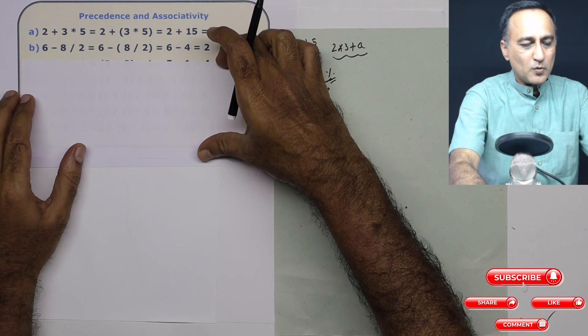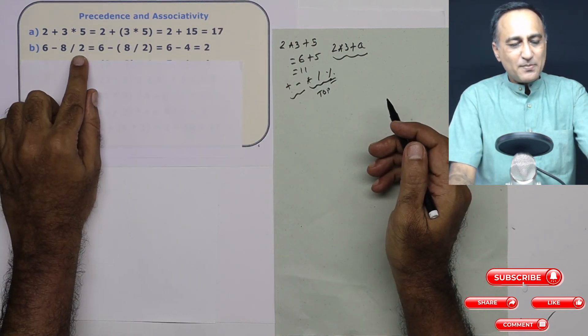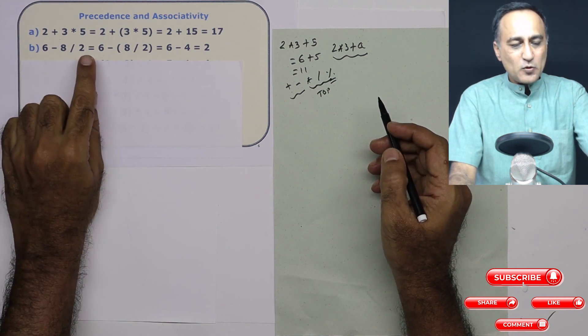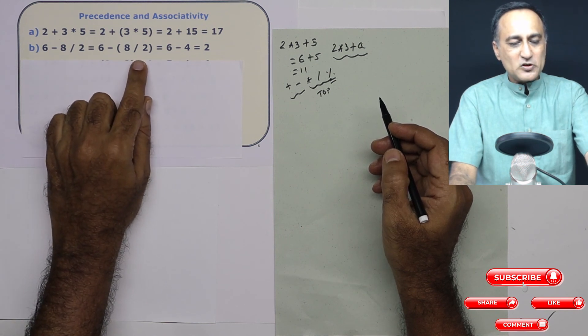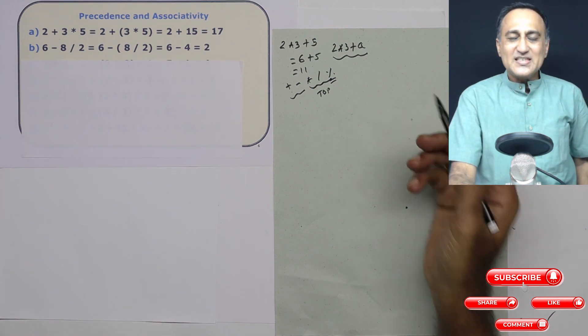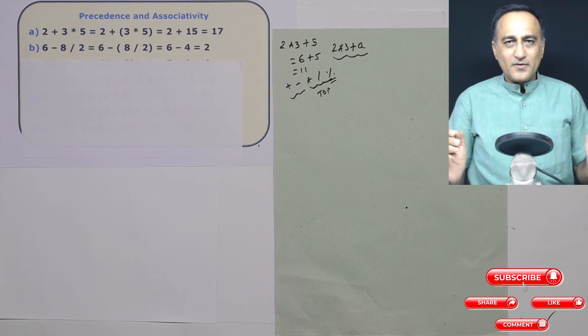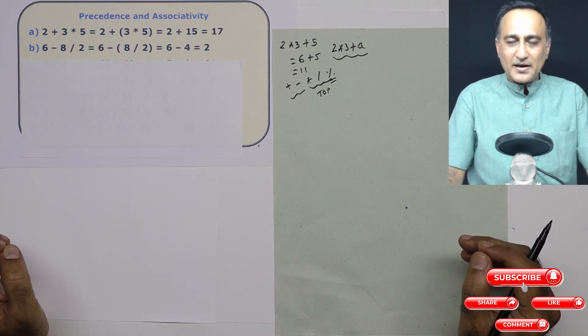Take a look at one more. Let's say I have got 6 minus 8 by 2. Again, division has got more precedence than minus. So I am going to do 8 upon 2 first, which happens to be 4. So 6 minus 4 is 2. So this is an example of how precedence was used to solve a simple arithmetic expression using plus, multiplication, minus, or division.